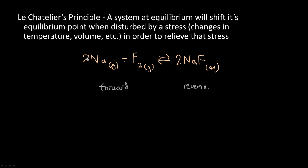In this example, the forward reaction would be sodium and fluorine combining to become sodium fluoride, and the reverse reaction would be sodium fluoride decomposing back into sodium and fluorine. For a system to be at equilibrium, the rate of the forward reaction has to equal the rate of the reverse reaction — sodium and fluorine combining at the same rate that sodium fluoride is decomposing.